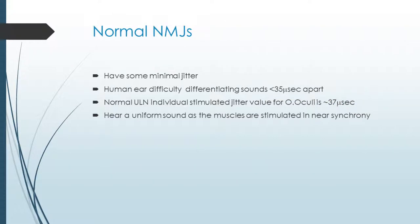Now, in normal neuromuscular junctions, there will always be some minimal jitter. Importantly, the human ear has difficulty differentiating sounds which are occurring less than 35 microseconds apart. The normal upper limit of individual stimulated jitter values for the orbicularis oculae is about 37 microseconds, which effectively means that you hear a uniform sound as the muscles are stimulated in near-synchrony in healthy normal neuromuscular junctions.